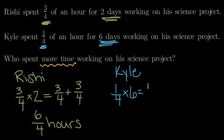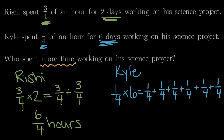We could say that Kyle spent one-fourth of an hour the first day, plus one-fourth of an hour the second day, one-fourth on the third day, the fourth day, the fifth day, and then on the sixth day he also spent one-fourth of an hour. So six one-fourths gives us a total of six-fourths. Kyle spent six-fourths, or six quarter-hours.